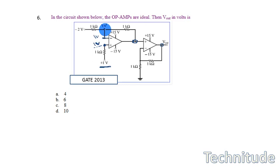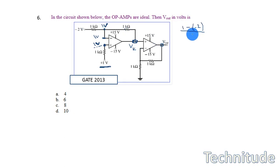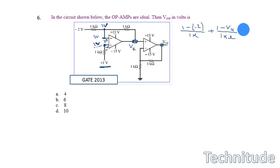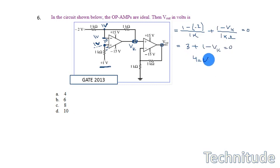Since we know this node voltage is one volt, we can apply KCL to find the intermediate voltage V_k. Setting up KCL at that node: (1 - (-2))/1kΩ + (1 - V_k)/1kΩ = 0. Note that the current into the op-amp input is zero (rule number one), so we ignore that branch. Simplifying: 1 + 2 = 3, so 3 + 1 - V_k = 0, and after multiplying by 1kΩ: V_k = 4 volts. But this is not the final answer.